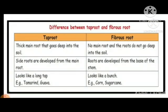A difference between taproot and fibrous root: Taproot has a thick main root that grows deeply into the soil, so you cannot pluck it out. Fibrous root has no main root and the roots do not go deep in the soil. Side roots are developed from the main root in taproot; roots are developed from the base of the stem in fibrous root. Taproot looks like a long tap; fibrous root looks like a bunch. Examples of taproot: tamarind and goa. Examples of fibrous root: corn and sugarcane.